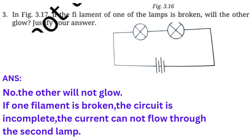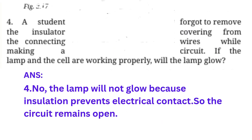Question number three: In figure 3.17, if the filament of one of the lamps is broken, will the other glow? Justify your answer. Answer: No, the other lamp will not glow. If one filament is broken, the circuit is incomplete and current cannot flow through the second lamp.